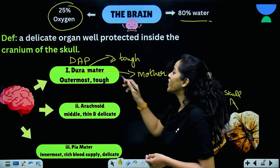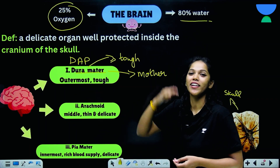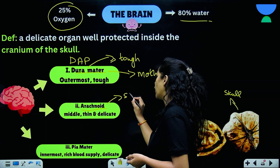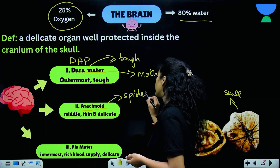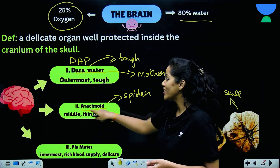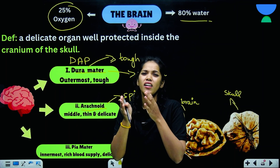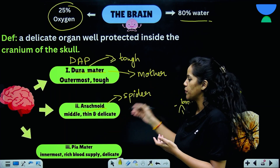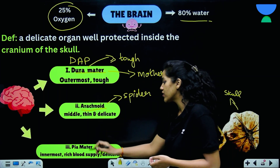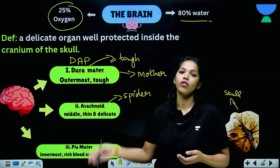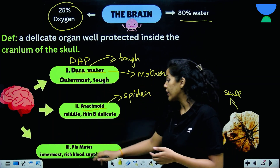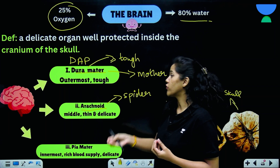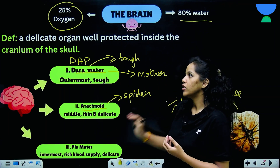The arachnoid is the middle layer. 'Arachnoid' means spider, and this layer is named so because it resembles a spider's web — soft, cushiony, thin and delicate. The pia mater is the innermost layer of the brain's coverings, very rich in blood supply and very delicate. These three membranous coverings — dura mater, arachnoid, and pia mater — are collectively called the meninges.